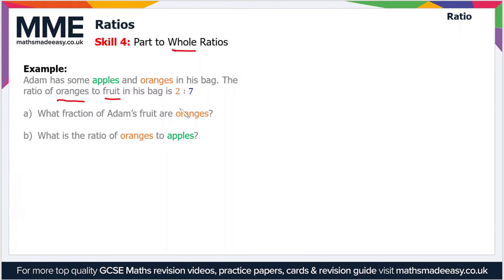So for part a, what fraction of Adam's fruit are oranges? Now we're just expressing one part in terms of the total. If fruit is the total and oranges are the part, then the answer to part a is 2 sevenths, because two parts oranges to seven parts in total.